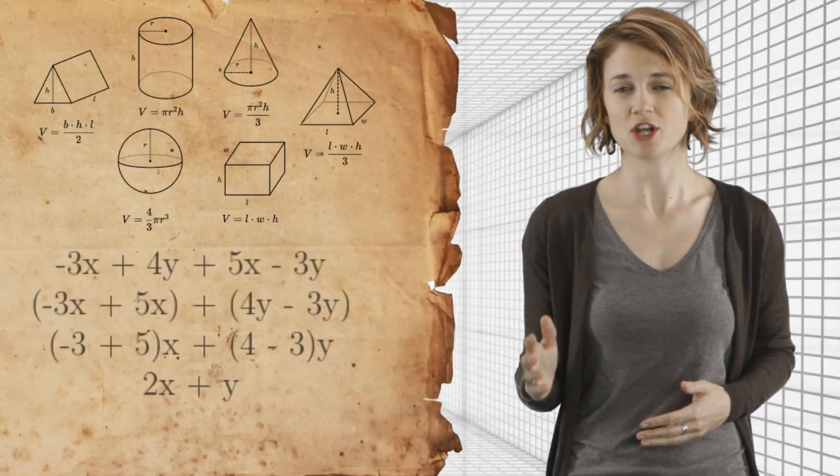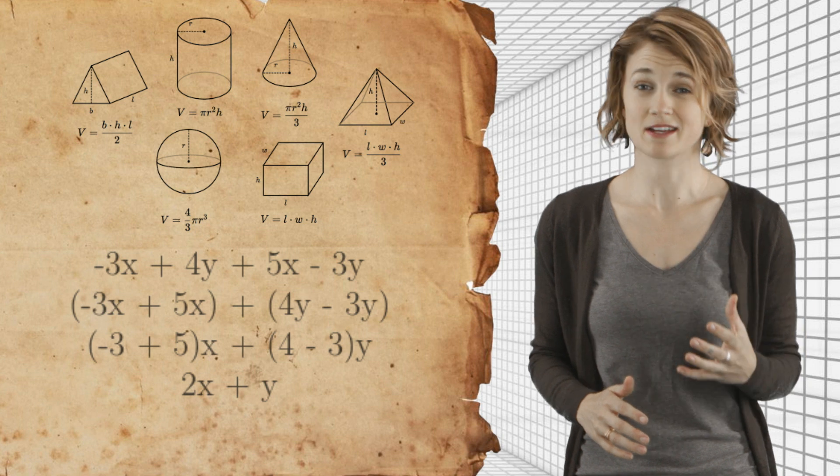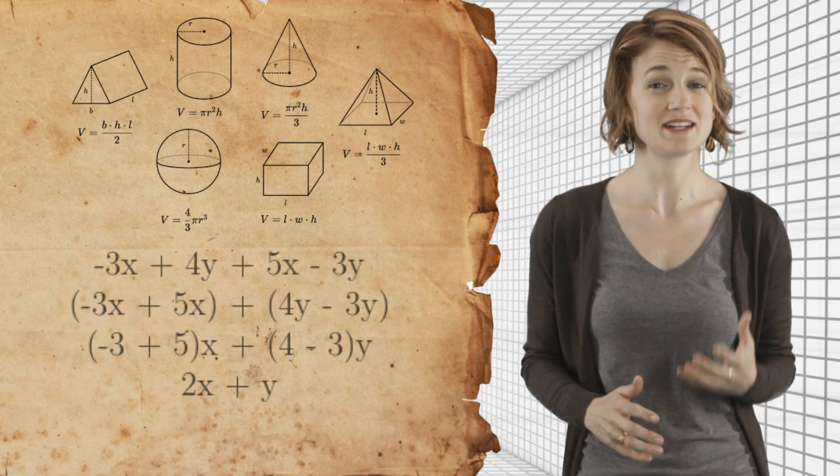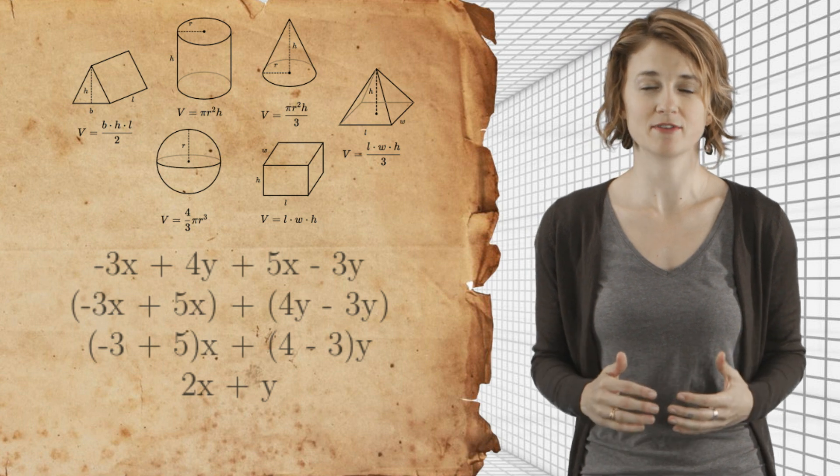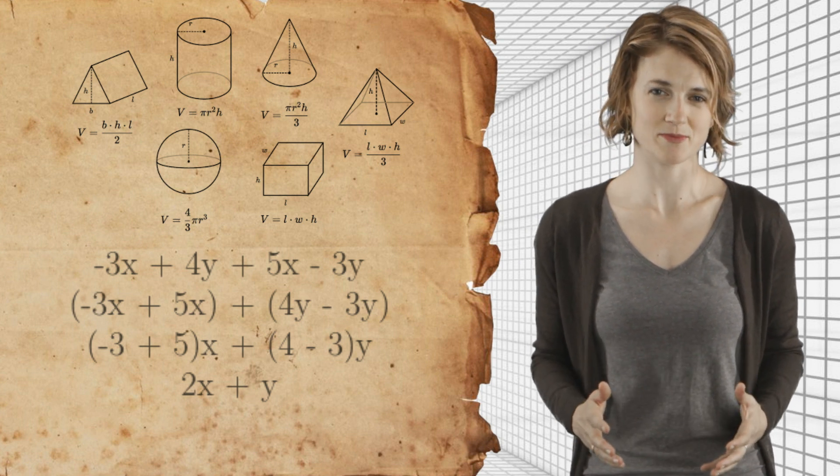All of the ingredients were there. People had rigorous theories of geometry and algebra. And the ability to rig a game of dice would have certainly provided an incentive to study probability. But there's very little evidence that they thought about randomness in mathematical terms.